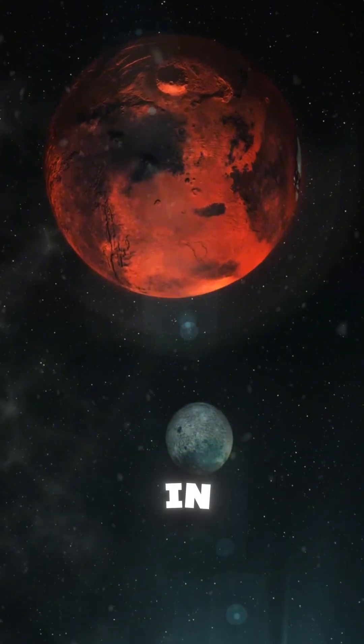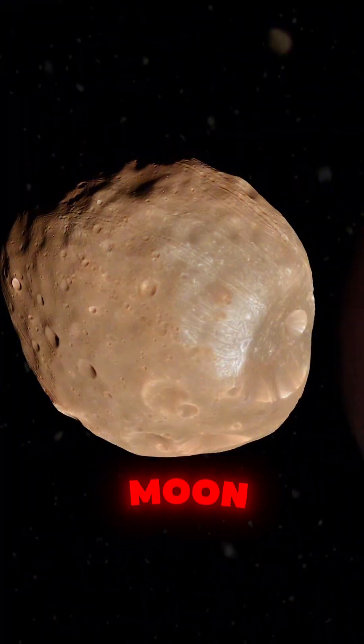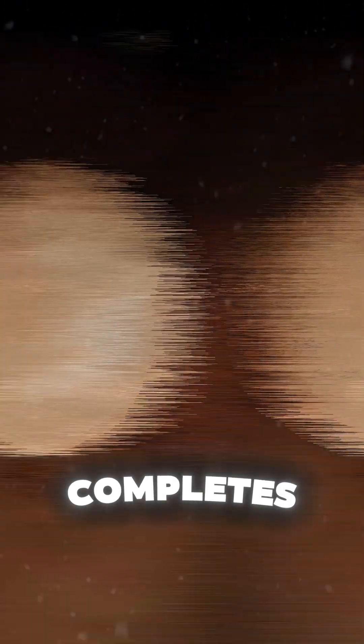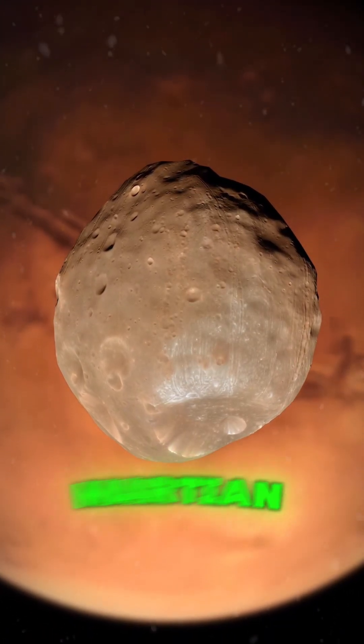Why Mars moons are unlike any others in the solar system. Well, Phobos, this moon orbits Mars so quickly, it completes three orbits in just one Martian day, or Sol.